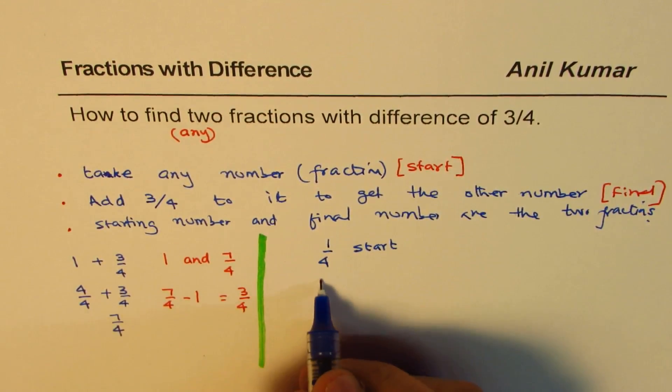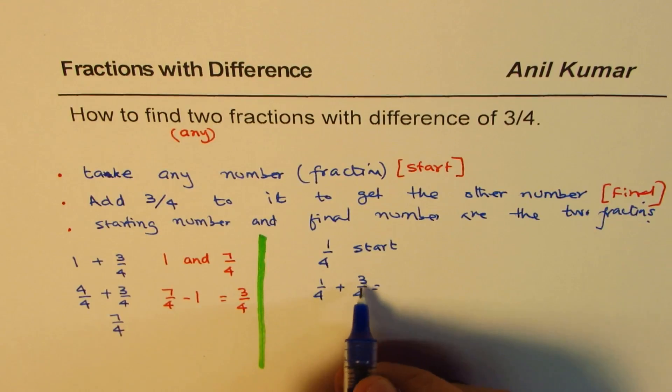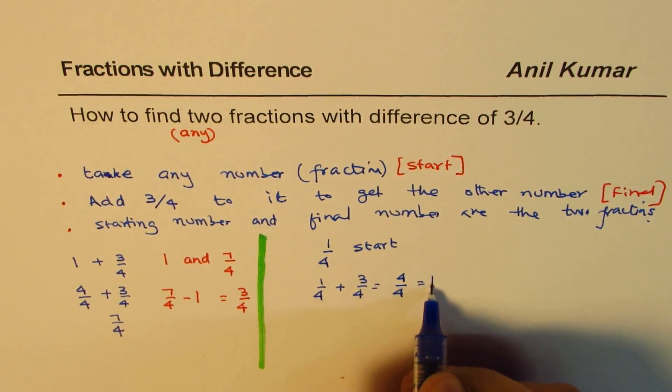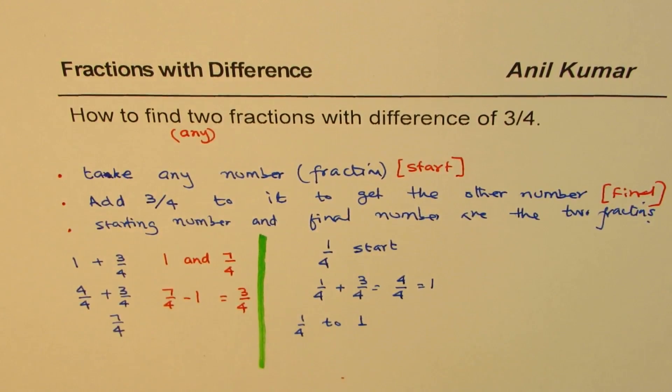Then, what is your final number? 1 out of 4 plus 3 out of 4. When you add this, what do you get? You get 4 out of 4, which is 1. So, the numbers could be 1 over 4 to 1.